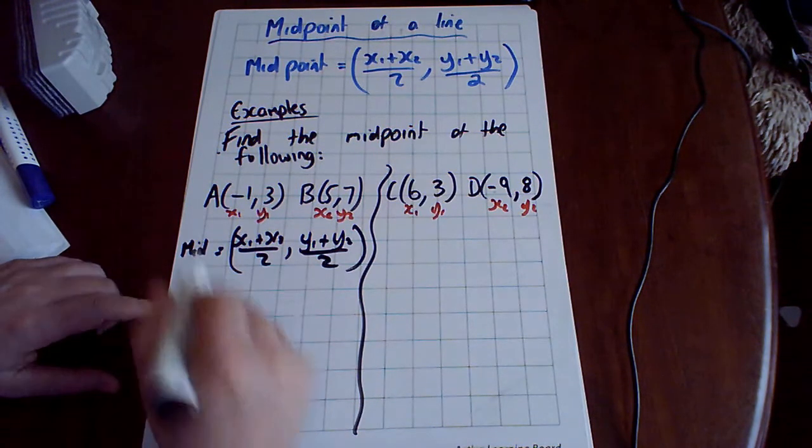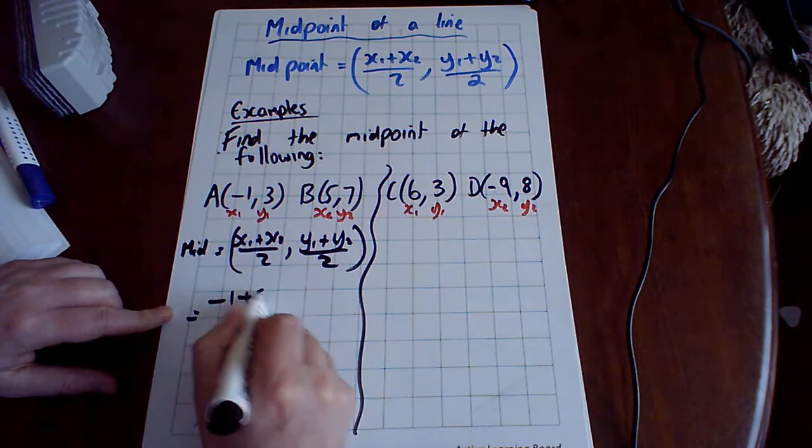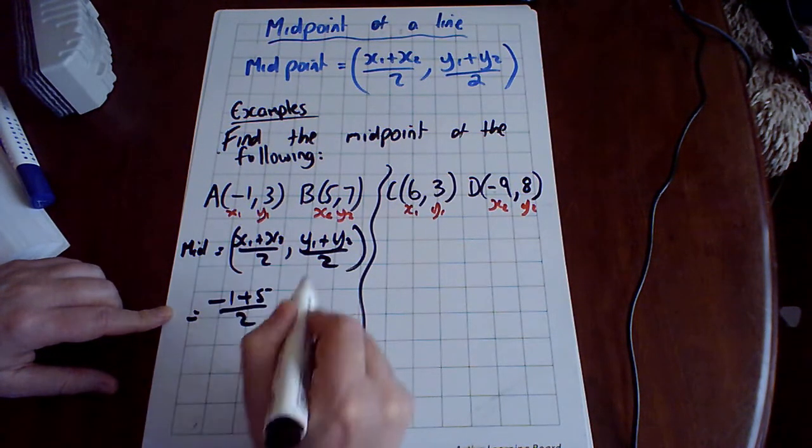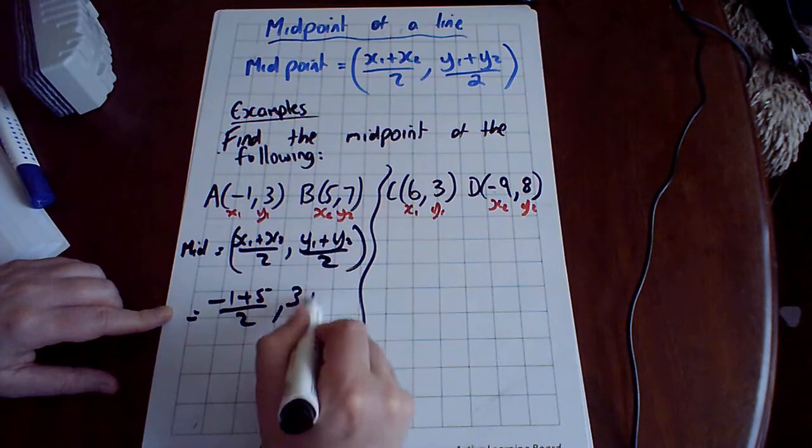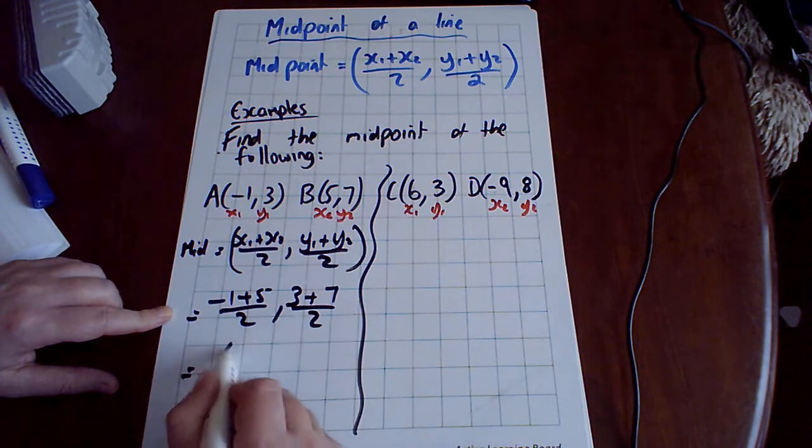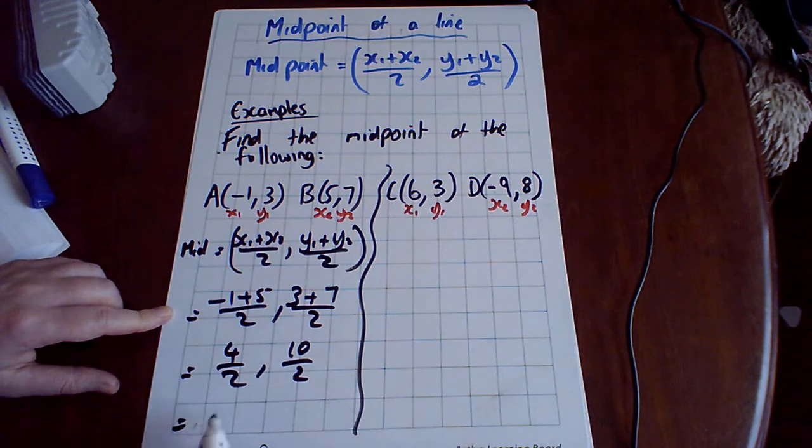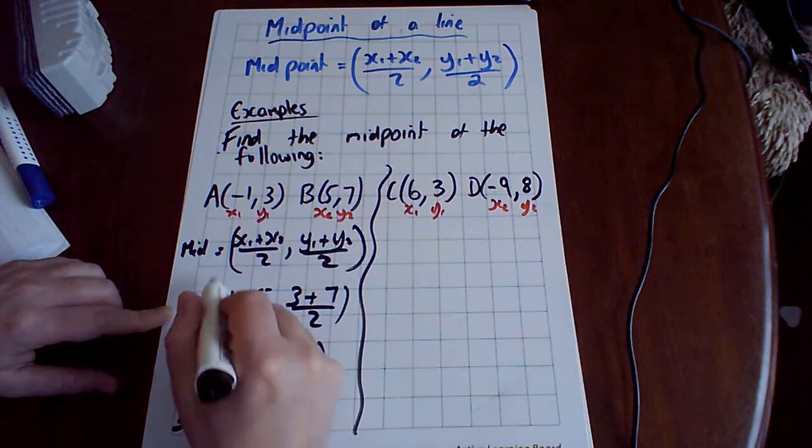In this case, my x1 is minus 1 and my x2 is 5. Add them together, divide by 2. And y1 is 3 plus y2 is 7 over 2. So you end up with 4 over 2 and 10 over 2.